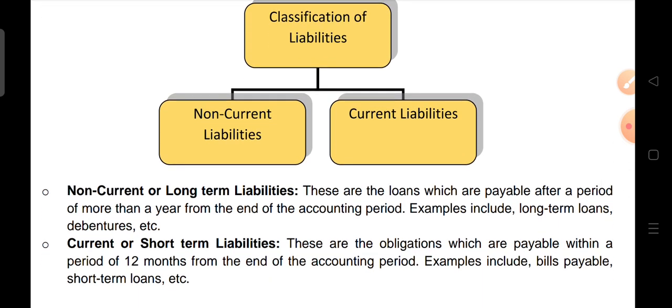Non-current and long-term liabilities means these are the loans which are payable after a period of more than a year. Long-term means more than a year. For example, long-term loans and debentures — these will be for more than a year.